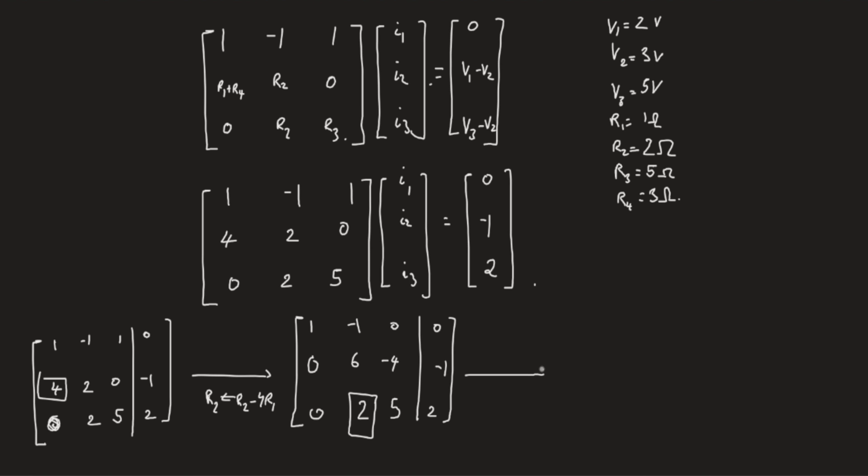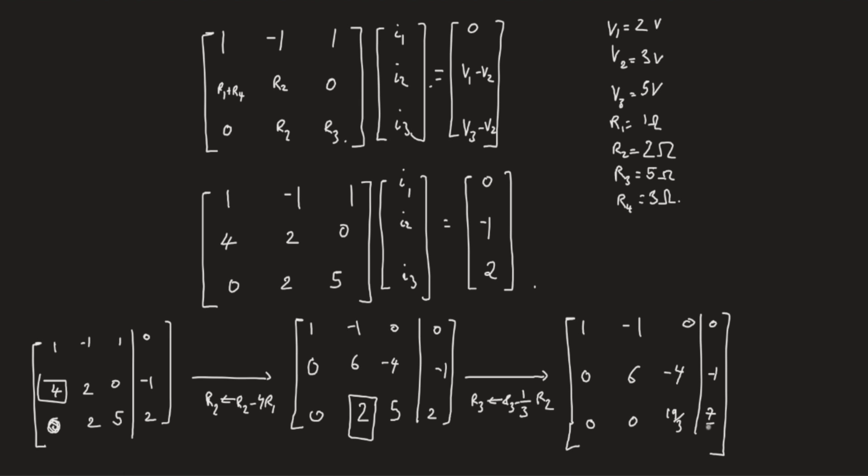Now, try to null out this guy. How do we do that? Instead of R3, you can put in R3 minus 1 over 3 R2. The first and second rows remain the same. So 0 minus 1 third of 0, that's 0; 2 minus 1 third of 6, that's 0; 5 minus 1 third of 4, that's 19 over 3; and 2 minus 1 third of minus 1, this is 7 over 3.